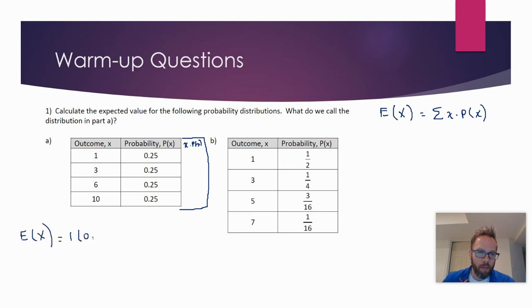We have one times 0.25 plus three times 0.25 plus six times 0.25 plus ten times 0.25. Now some of you may have recognized that you could have just factored out the 0.25 and multiplied 0.25 by whatever one plus three plus six plus ten is, that is 20. Twenty times 0.25. The expected value for this distribution is five.